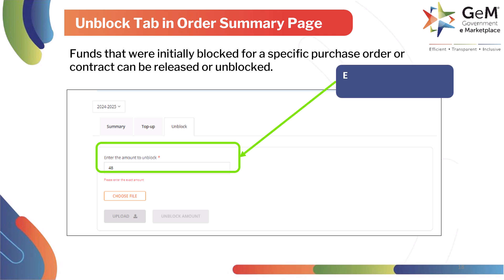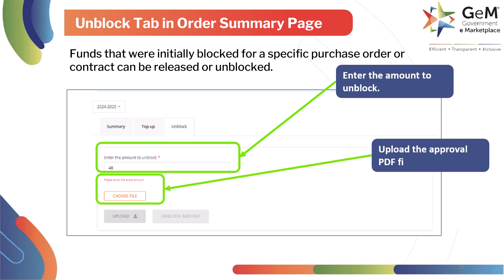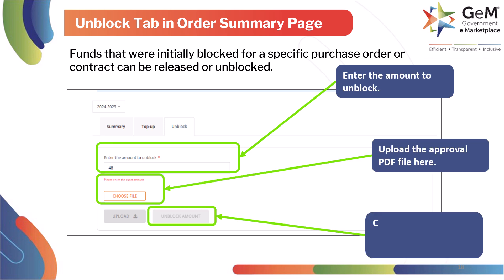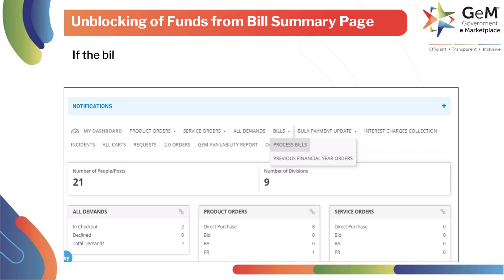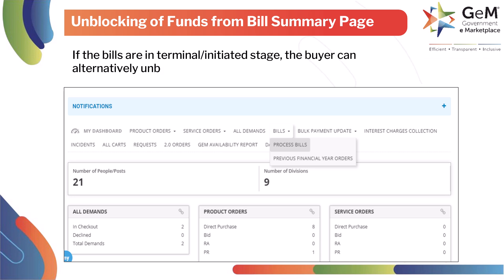Enter the amount to unblock and upload the approval PDF file. Click on Unblock amount to release the remaining fund. Note: using this step, unblocking can be done for bills in both terminal and non-terminal stage. If the bills are in terminal or initiated stage, the buyer can alternatively unblock funds from the bill summary page.